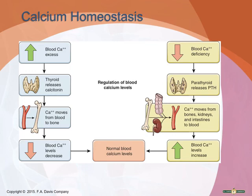Calcium homeostasis works as follows: if blood calcium is high, the thyroid releases calcitonin, which moves calcium from the blood into the bones, decreasing blood calcium back to normal. If blood calcium is low, the parathyroid releases parathyroid hormone, which moves calcium from bones into the bloodstream, causes the kidneys to reabsorb calcium, and activates vitamin D so calcium can be absorbed from the intestines — raising blood calcium back to normal. It's a constant back-and-forth to maintain homeostasis.